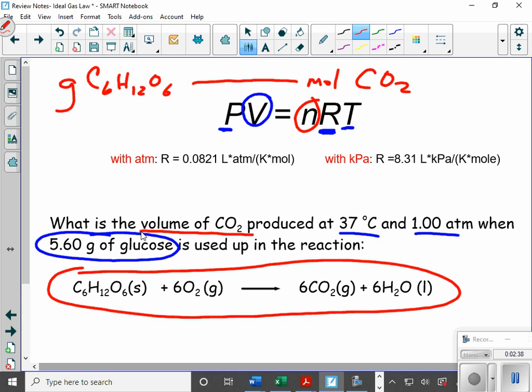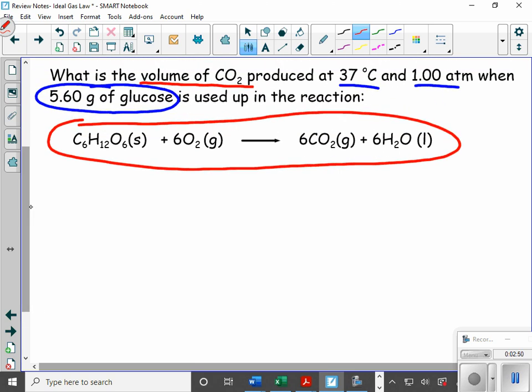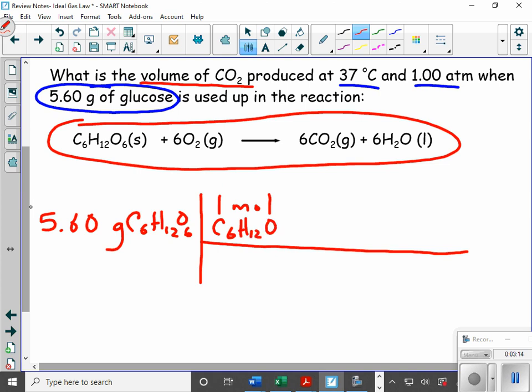And then once I have found that, I can go into my ideal gas law. So what I'm going to do is I'm going to take this 5.60 grams of glucose. And the first thing I'm going to do, I'm going to make my box here, I'm going to flux capacitor this to moles of glucose. So I know that one mole of C6H12O6 has a molar mass of 180.1572 grams of glucose. My grams cancel. I have converted this into moles of glucose.